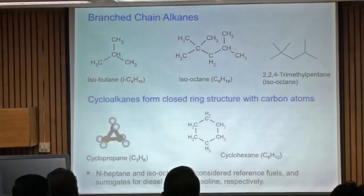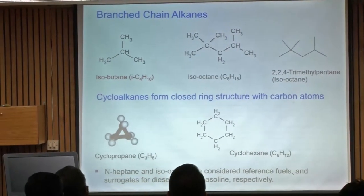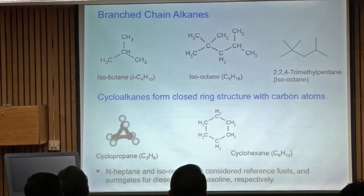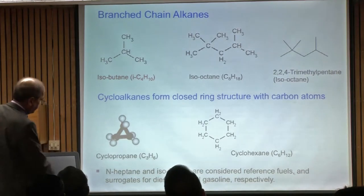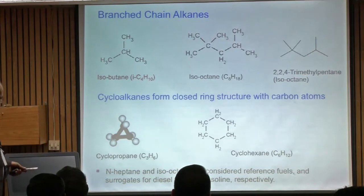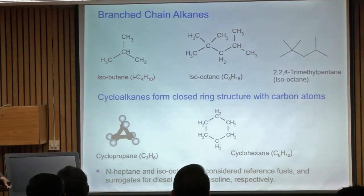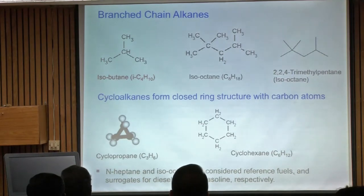Branched-chain alkanes include isooctane and isobutane. Then there are cycloalkanes arranged in a ring structure — you need at least three carbons to make a ring, so cyclopropane is the smallest, then cyclohexane and so on.